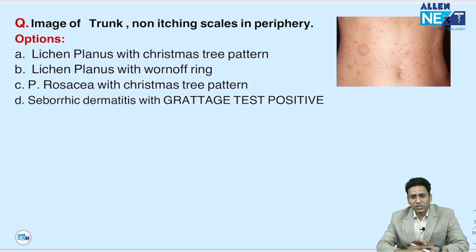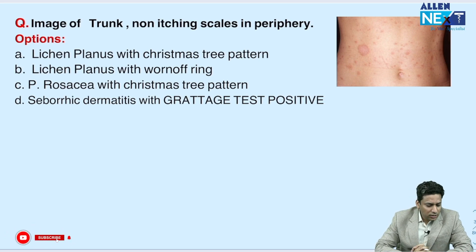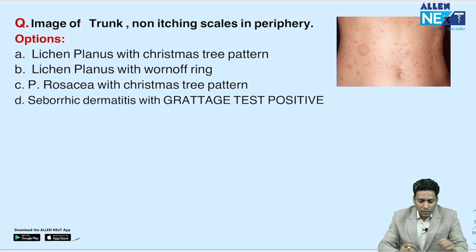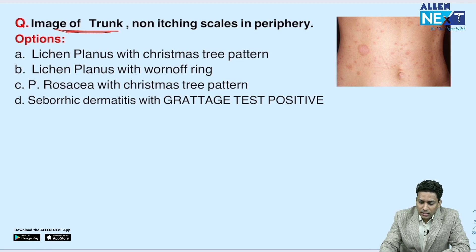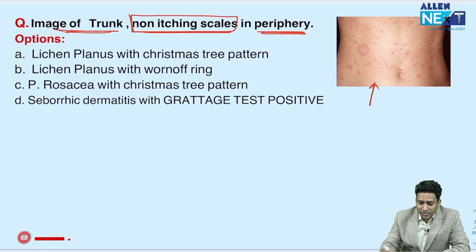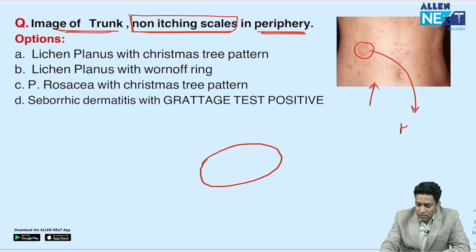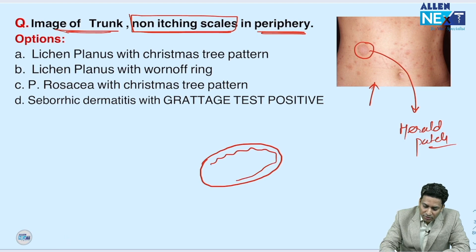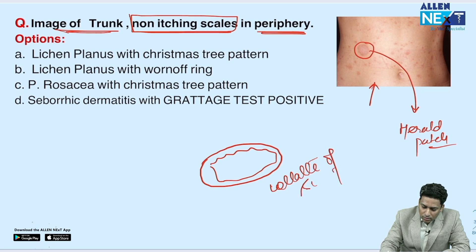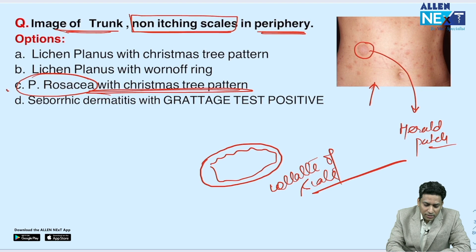Moving on to the next question — an image was given. An image of the trunk was shown with non-itchy scales present at the periphery. This is very characteristic of Pityriasis rosea, where you find erythematous lesions — a herald patch — having scaling present at the periphery, that is collarette of scales. There is also a fir tree or Christmas tree-like pattern. So the answer here is Pityriasis rosea.